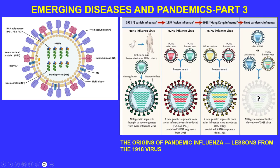Moving another 11 years to the Hong Kong influenza — H3N2 — you had the H3 avian virus and the human H2N2 virus undergo reassortment. Two RNA strands came from the H3 avian virus, one from the H2N2 human virus, and five more traced all the way back to the original Spanish influenza of 1918.